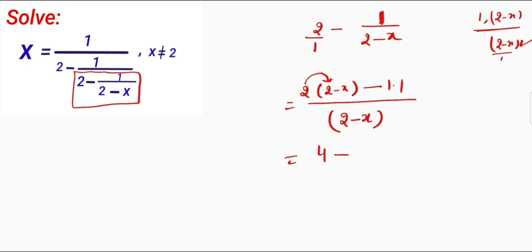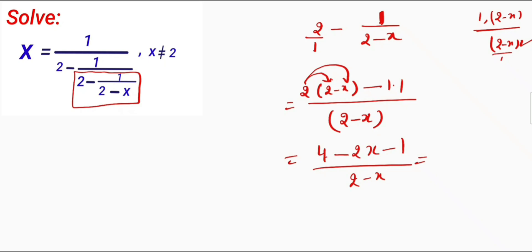Then this 2 will multiply with x, giving negative 2x. So 1 times 1 is 1, divided by 2 minus x. So I will get 4 minus 1, which is equal to 3 minus 2x, divided by 2 minus x.